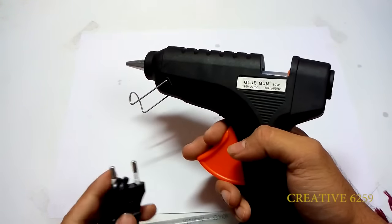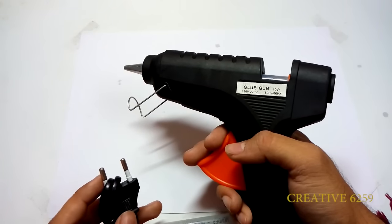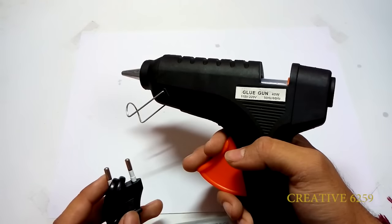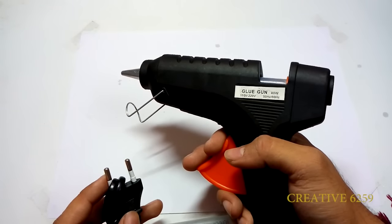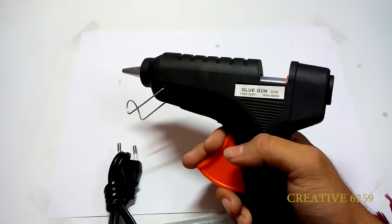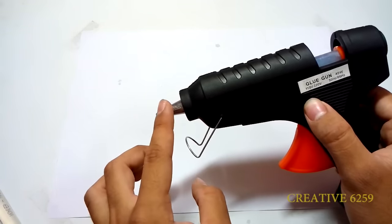Now this is the trigger and this is a 40 watt glue gun. Now let's plug in the plug inside our socket. We have to put this plug in for somewhere around 4 to 5 minutes to heat up the gun. So now let's just plug it in.